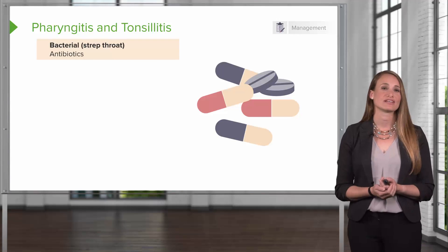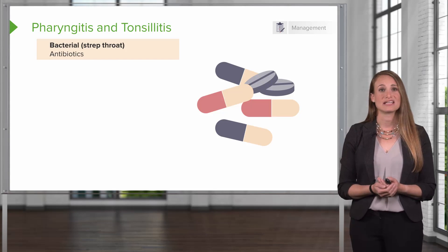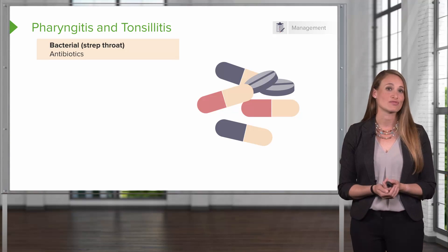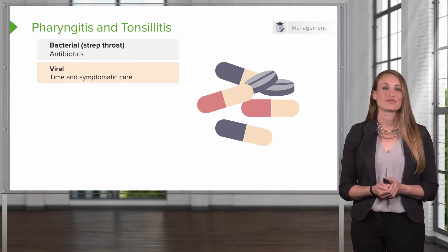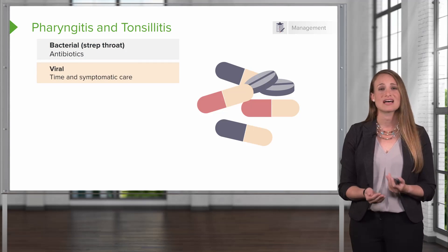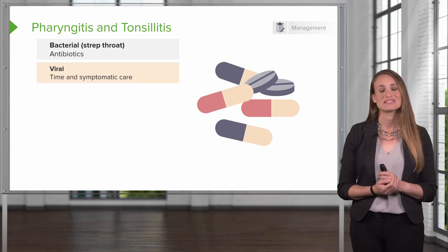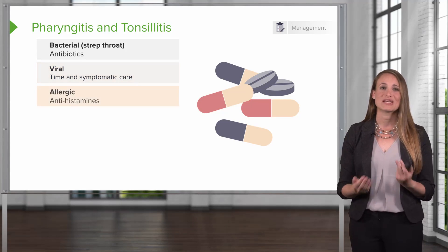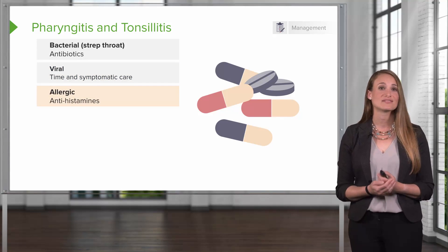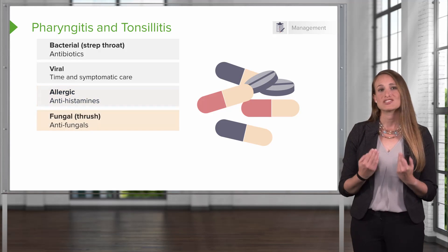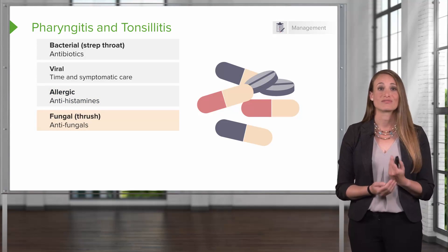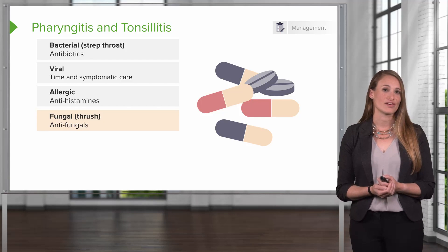How do we treat different conditions that cause pharyngitis and tonsillitis? It depends on what's causing the problem. If it's a bacterial problem like strep throat, we do need to treat these with antibiotics. If the patient has a viral sore throat, they're just going to need rest, time, and symptomatic care — this will be self-limiting. If the sore throat is caused by allergies, we'll place them on antihistamines. If the patient has a fungal sore throat called thrush, they're going to need antifungal therapy.